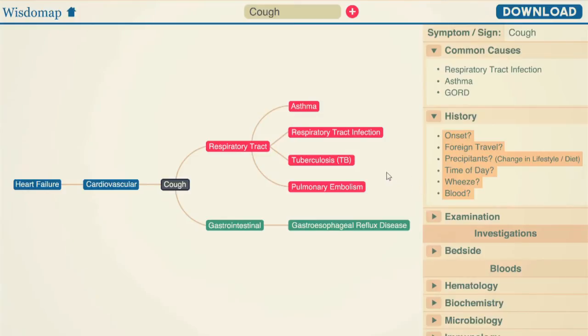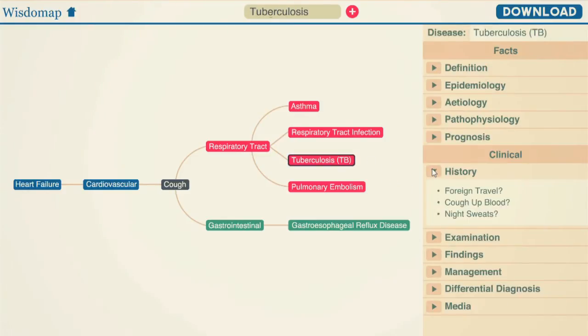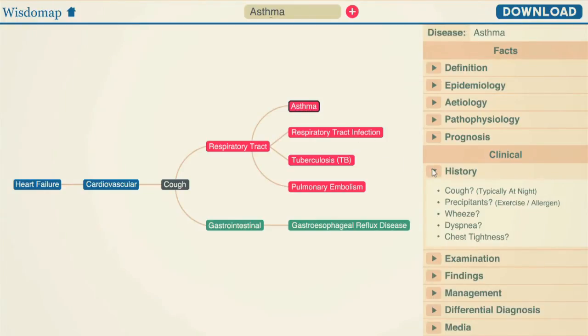Once you're done with the symptom, you map out the relevant diseases categorized by organ system. You can see here that diseases are also broken down into all the subsections you need to remember.